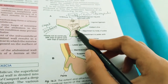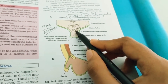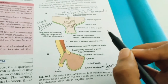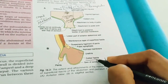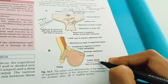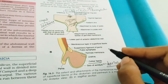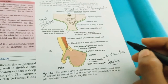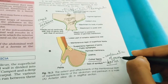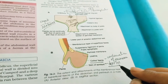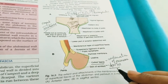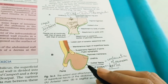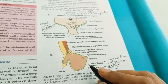The membranous layer, Scarpa's fascia, is continuous below with the membranous layer of the superficial fascia of the perineum, known as Colles' fascia. This continuation with the perineum is an important point to remember. The attachments of Scarpa's fascia of the abdomen and Colles' fascia of the perineum together prevent passage of extravasated urine.